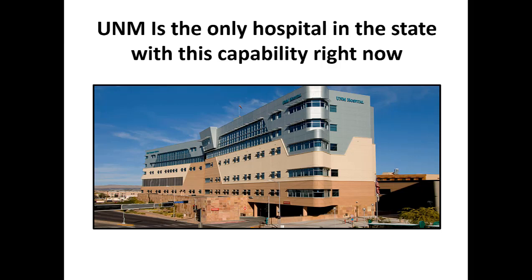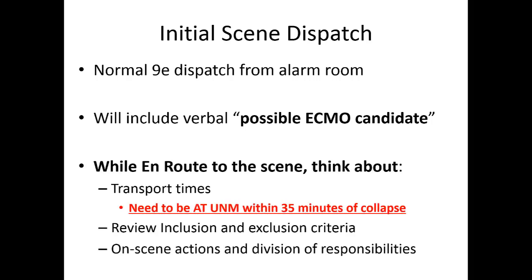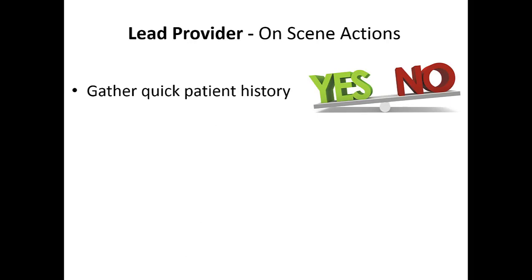For a normal cardiac arrest dispatch, dispatch will recognize potential ECMO candidates from the phone call and notify you en route that this could be a possible ECMO candidate based on patient age, witnessed arrest, and bystander CPR. It's up to the crew to get there and confirm the other inclusion and exclusion criteria on scene. While en route, officers should think about transport times to the hospital, possible downtime, whether you can get the patient to the hospital within 35 minutes of collapse, review those criteria, and start dividing up on-scene actions so things go smoothly and everyone knows their role.